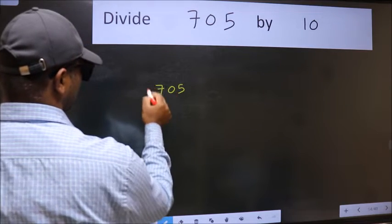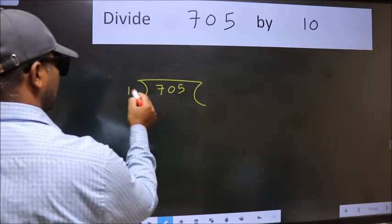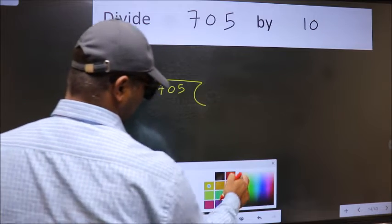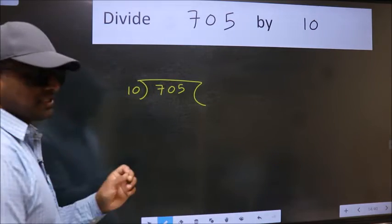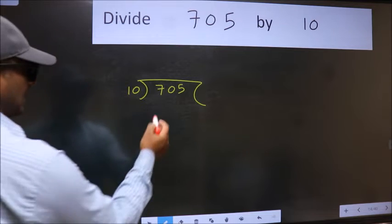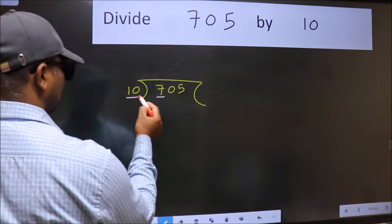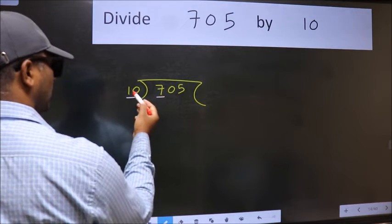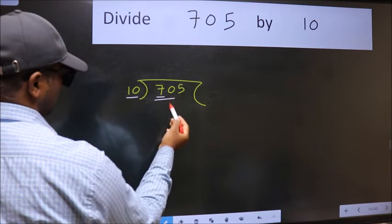705 here, 10 here. This is your step 1. Next. Here we have 7 and here 10. 7 is smaller than 10. So take two numbers, 70.